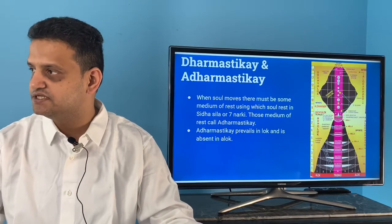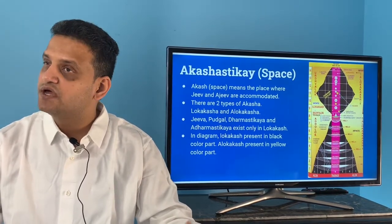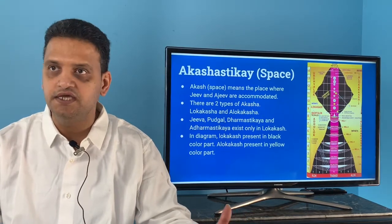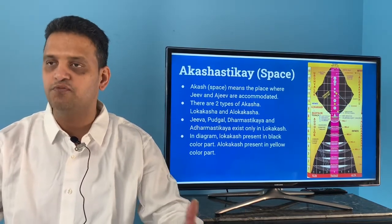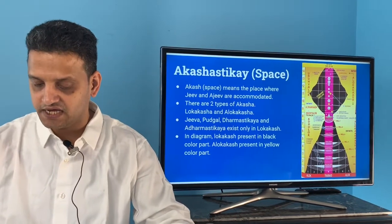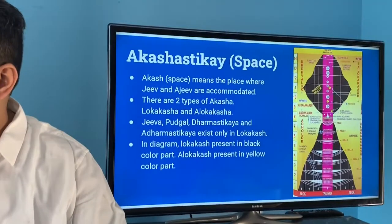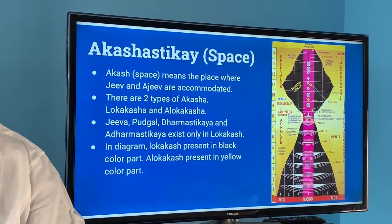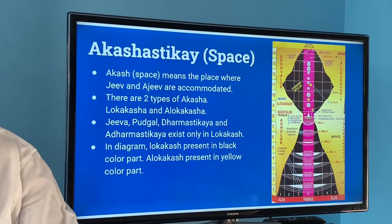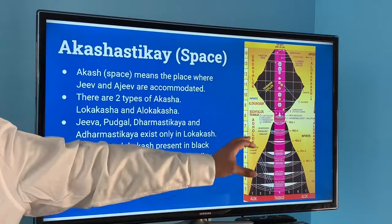Akas is the space where Jiv and Ajiv are accommodated. In our daily life, we as Jiva and also Ajiv things like chairs and tables are accommodated in the same space — that is called Akas. There are two types of Akas: Lokakas and Alokakas. Jiv, Pudgal, Dharmashtikai, and Adharmashtikai exist only in Lokakas. In diagrams, Lokakas is shown in black and Alokakas in yellow.